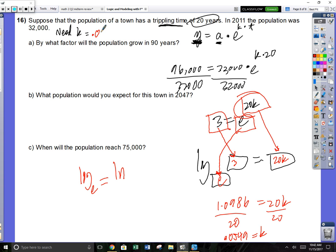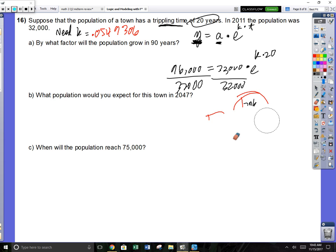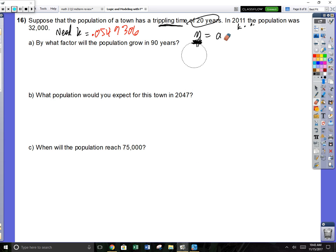It's a big decimal. It is like 5% a year, almost 5.5%. That population is increasing by 5.5% every single year. That will add up to tripling in a 20-year time span. Now you found k. You need to know the yearly growth rate, and that's what we just found, 5.5%.